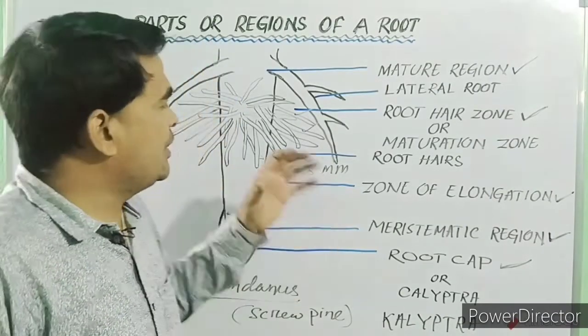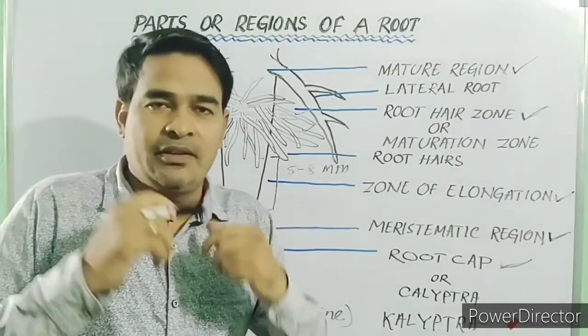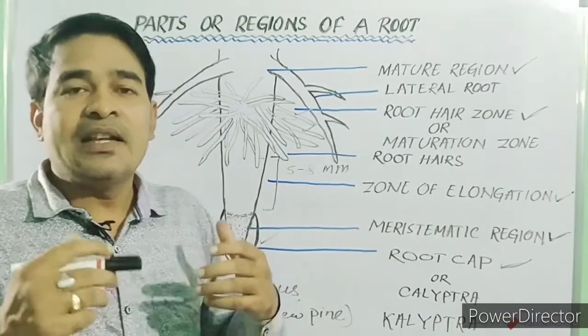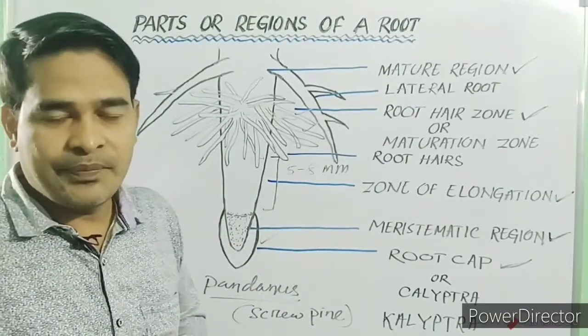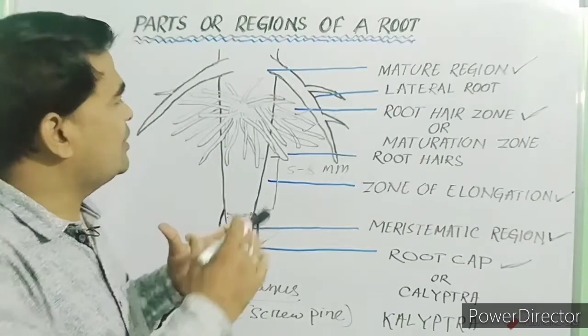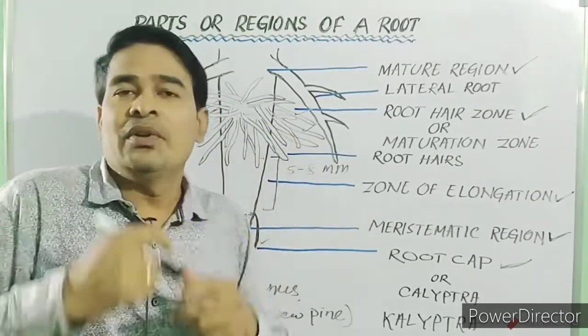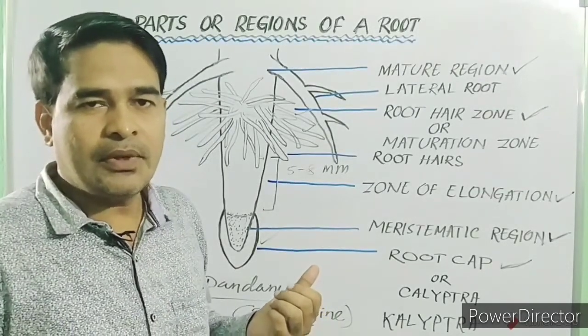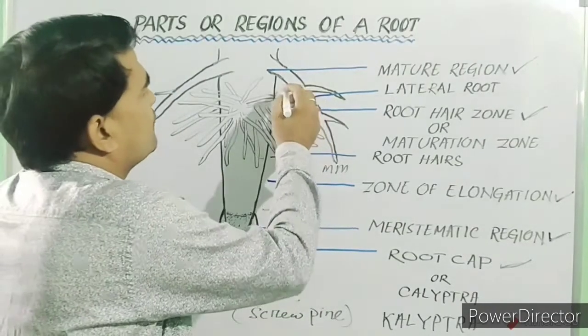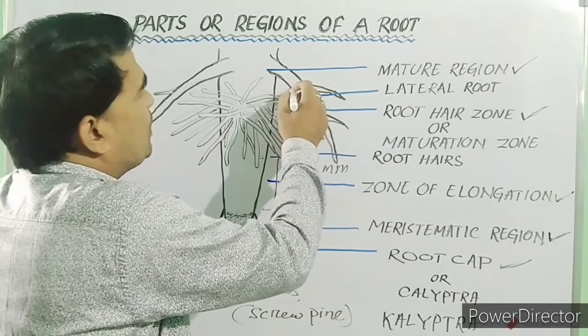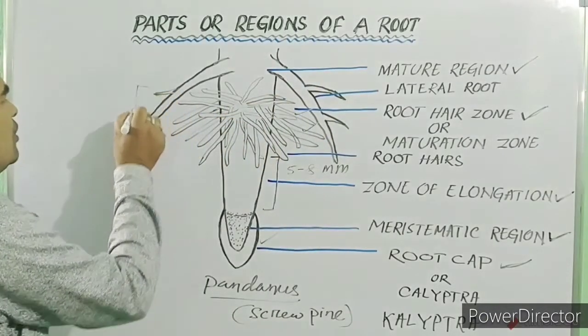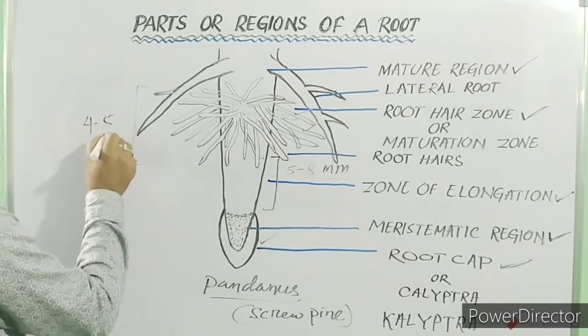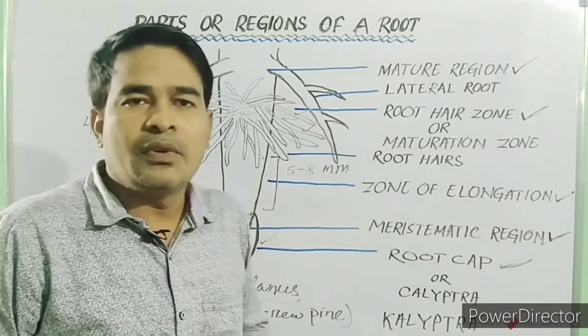However, these root hairs are not permanent. They become functionless and wither after some time. But this zone remains constant due to growth of the root. The length of this zone is about 4 to 5 cm, 1 to 6 cm.